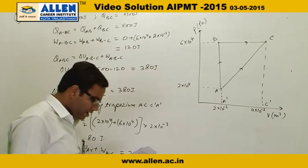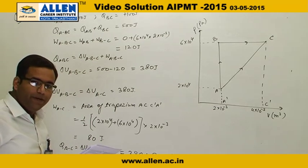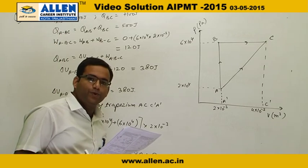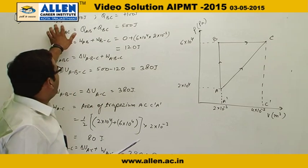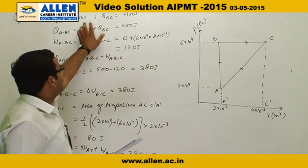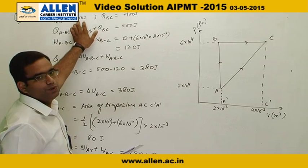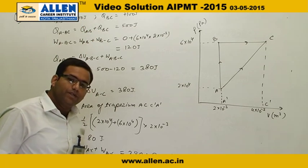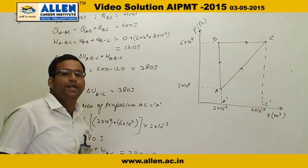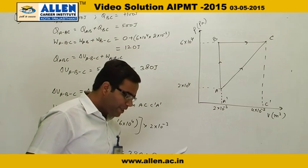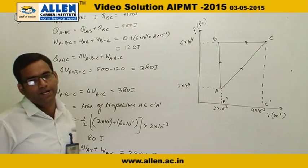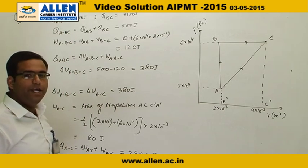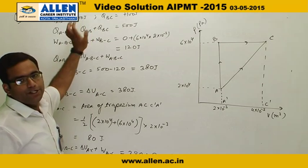In process AB, 400 joules of heat is added to the system, so QAB will be equal to plus 400 joules. We take this as positive because if some amount of heat is added to the system, then this heat will be taken as positive.